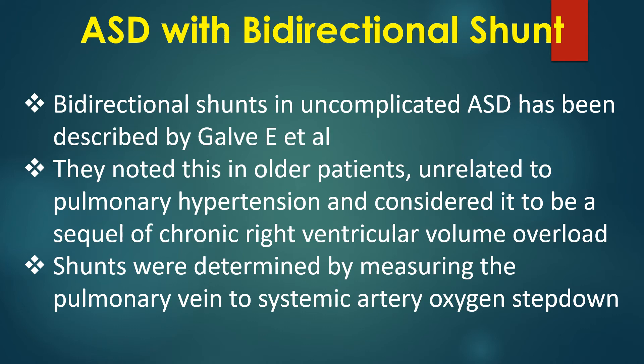Bidirectional shunts in uncomplicated ASD have been described by Galway and colleagues. They noted this in older patients, unrelated to pulmonary hypertension, and considered it to be a sequel of chronic right ventricular volume overload. Shunts were determined by measuring the pulmonary vein to systemic artery oxygen step-down.